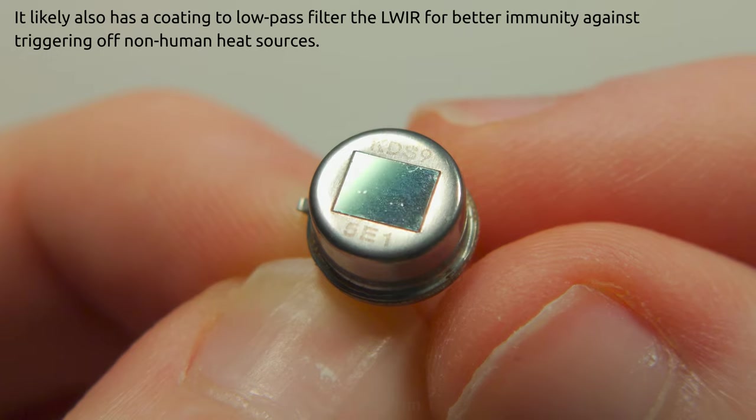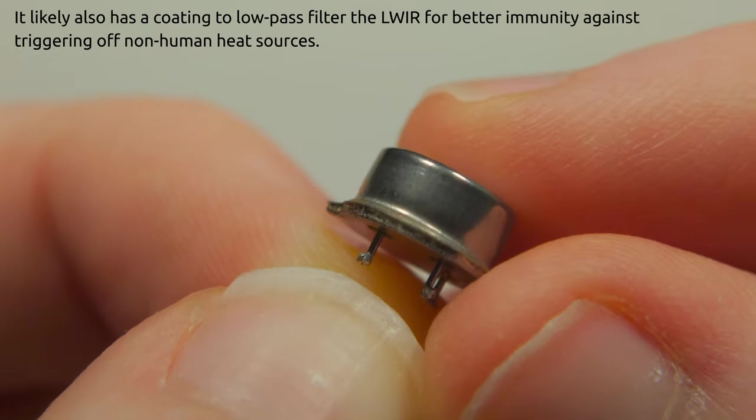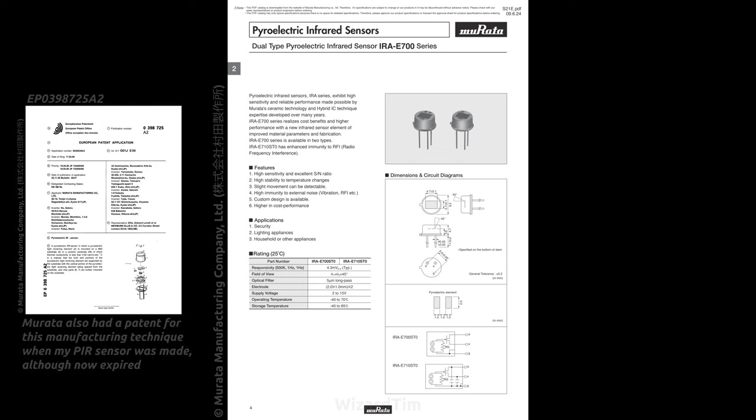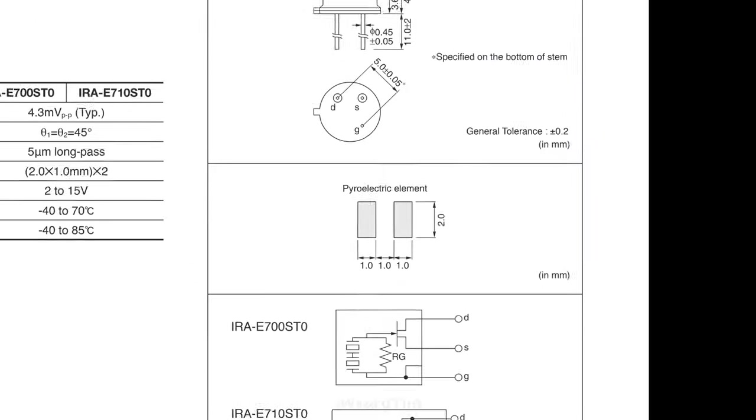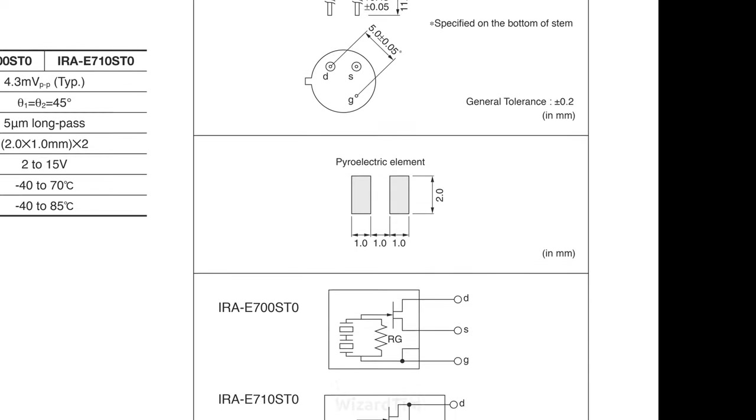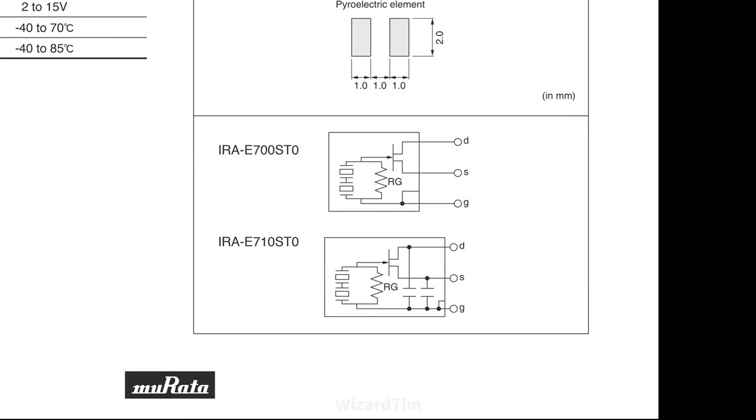Now unfortunately these markings didn't really return anything, however after looking quite a while I found this datasheet from Murata. I suspect that this is the device just based on the wording that they use when they talk about the manufacturing technique, but we can see either way the sort of stuff that should be inside. There is down here a pyroelectric element which has two pieces and it's in this sort of configuration which is exactly what other people say is inside these on the internet.